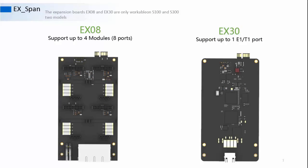S100 and S300 need expansion boards to install telephony modules and expand capacity. There are two kinds of expansion boards. The EX08 board is used to insert the above-mentioned modules, with a maximum of four modules. The EX30 board has one onboard E1/T1/PRI interface to connect to a PRI line. S100 supports two boards and S300 supports three.